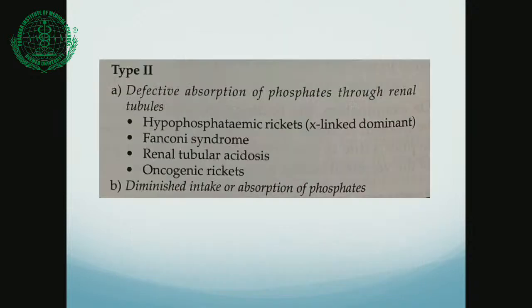In type 2 rickets we have a problem with phosphorus ions. Defective absorption of phosphorus through renal tubules leads to certain genetic disorders, most commonly X-linked hypophosphatemic rickets which is an X-linked dominant disorder, the Fanconi syndrome, renal tubular acidosis, and oncogenic rickets. Diminished intake of phosphates will also affect the metabolism in a similar way.